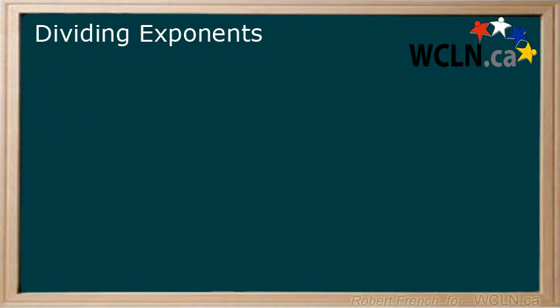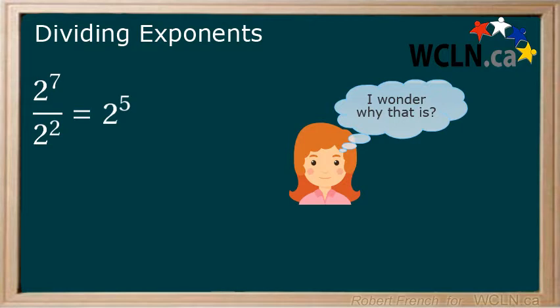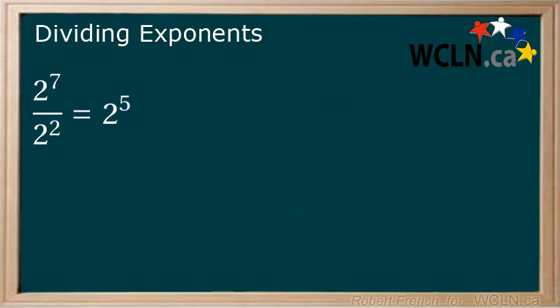Let's start with an example of 2 to the power of 7 divided by 2 to the power of 2. Now I will tell you that the answer is 2 to the power of 5. Maybe you can see why if you start thinking along the lines of how multiplication of powers worked.